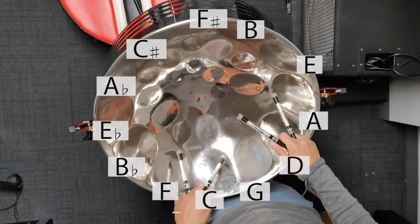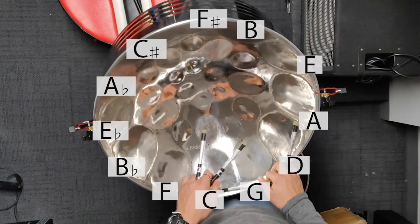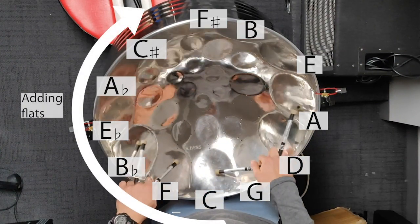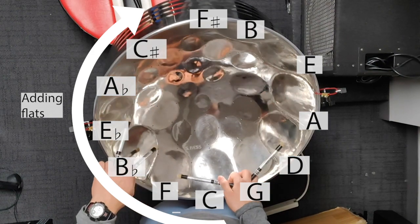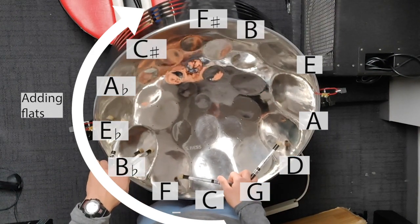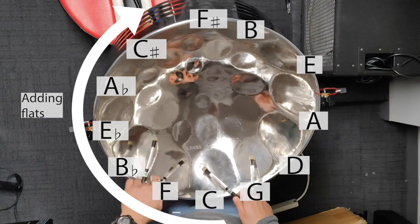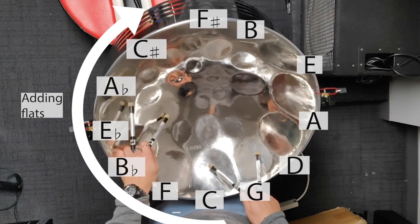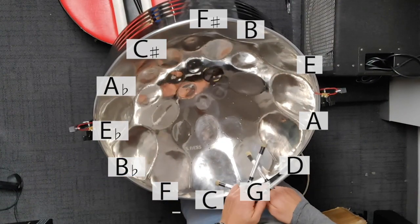Similar for the flats. If I add one flat to C major, as I said, we get to F major. And if I add two flats, B flat major. If I add three flats, E flat major. So right, that's one thing to keep in mind.